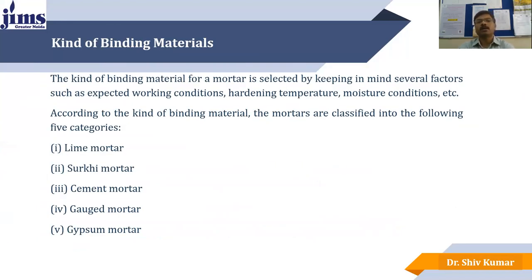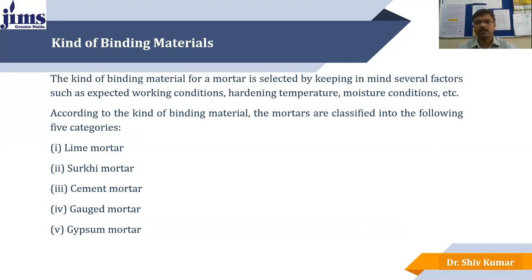The kind of binding material for mortar is selected by keeping in mind several expected working conditions like hardening, temperature, moisture condition, and other environmental conditions. According to the kind of binding material, mortars are classified into five categories: lime mortar, surkhi mortar, cement mortar, gauze mortar, and gypsum mortar.